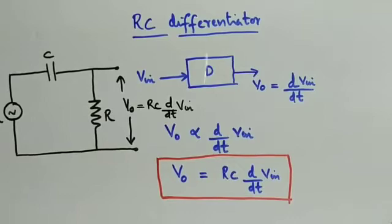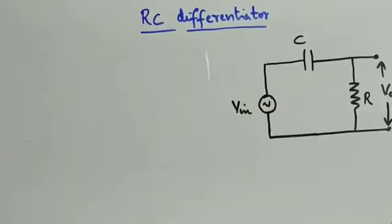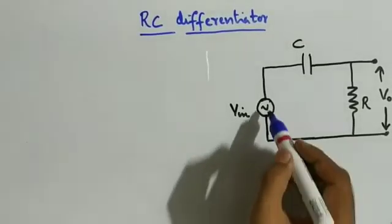This is the RC network. The RC network has an input signal, and this is the output — the derivative of the input.